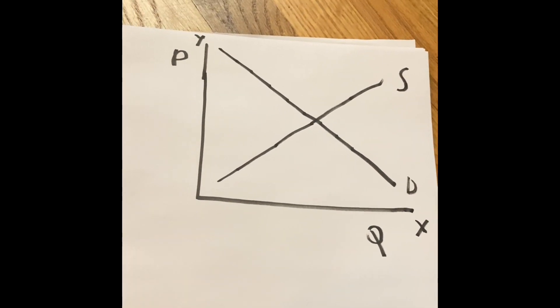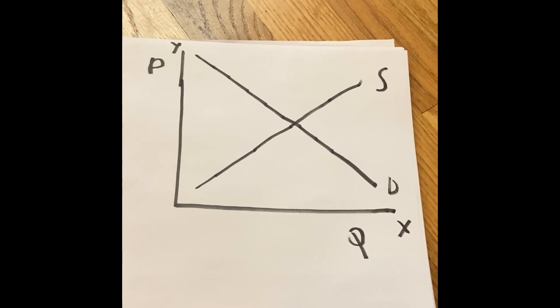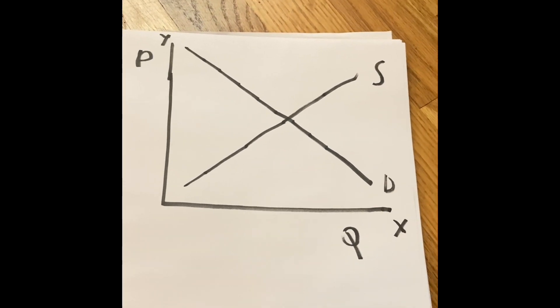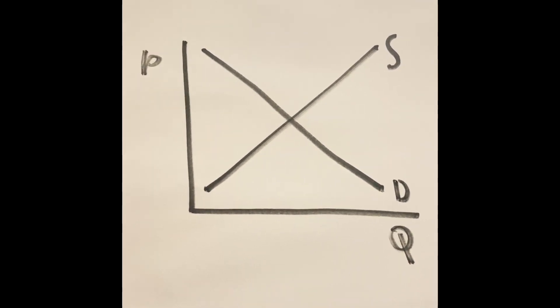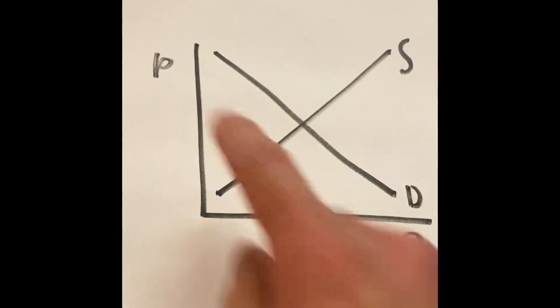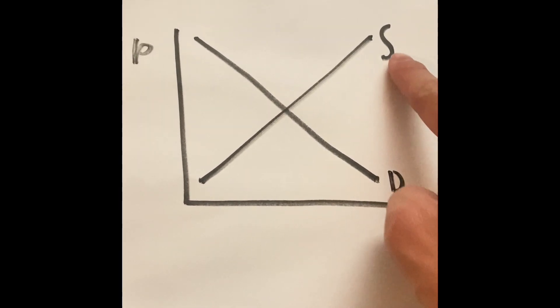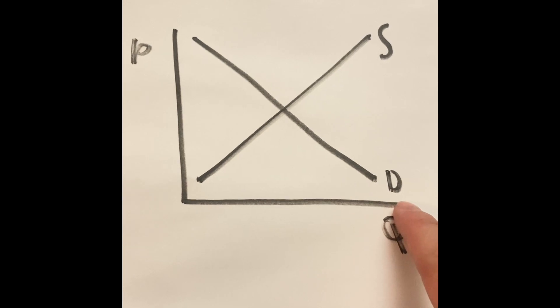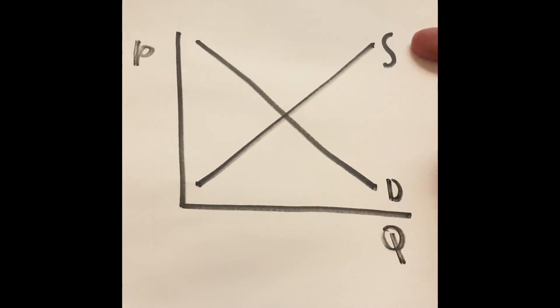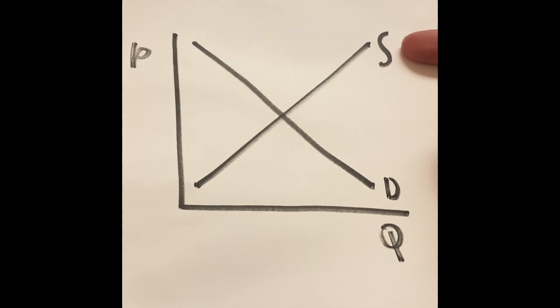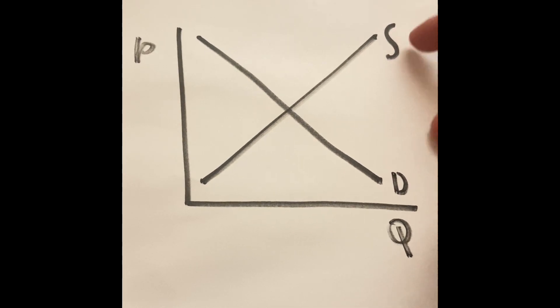This graph can show a lot about economics and how everything behaves. If you take a look at the graph, there are four things. There is the price, the quantity, the supply, and the demand. And the most important rules that are in this graph is the supply can affect huge amounts of it. And the demand can also affect huge amounts of it.